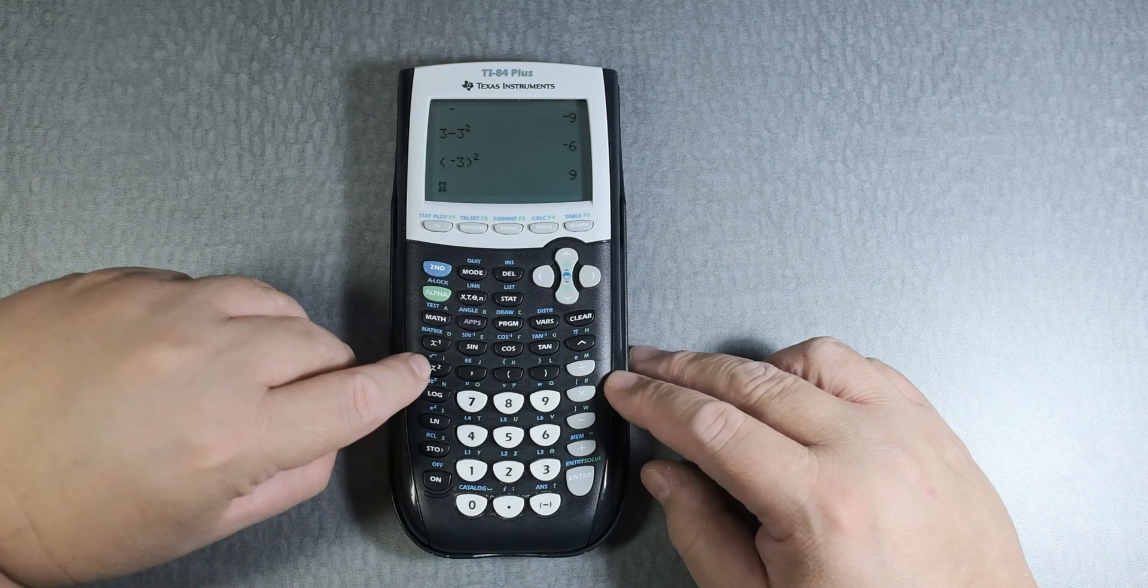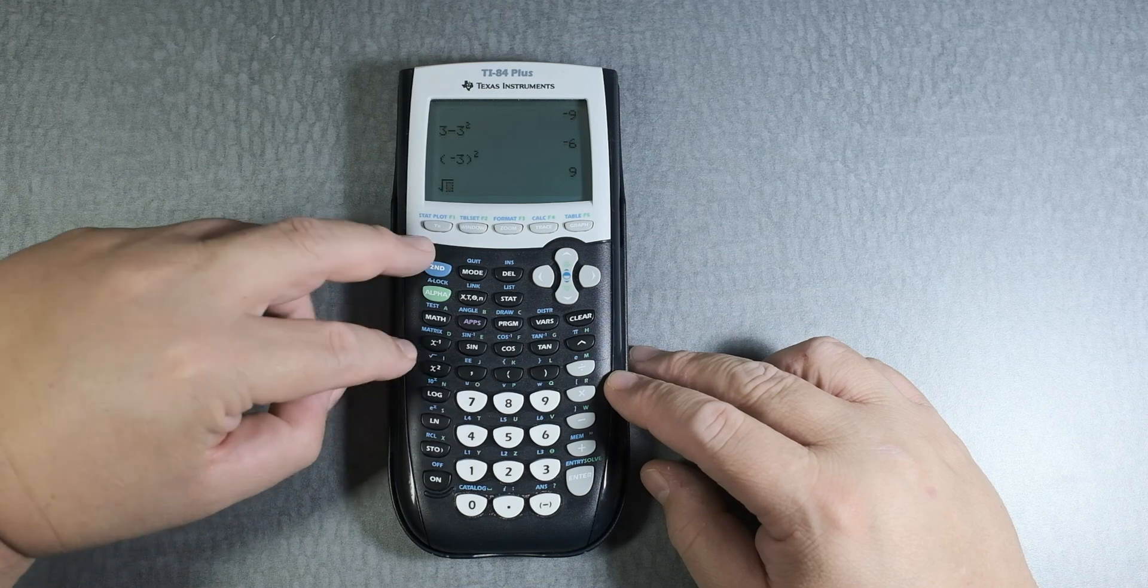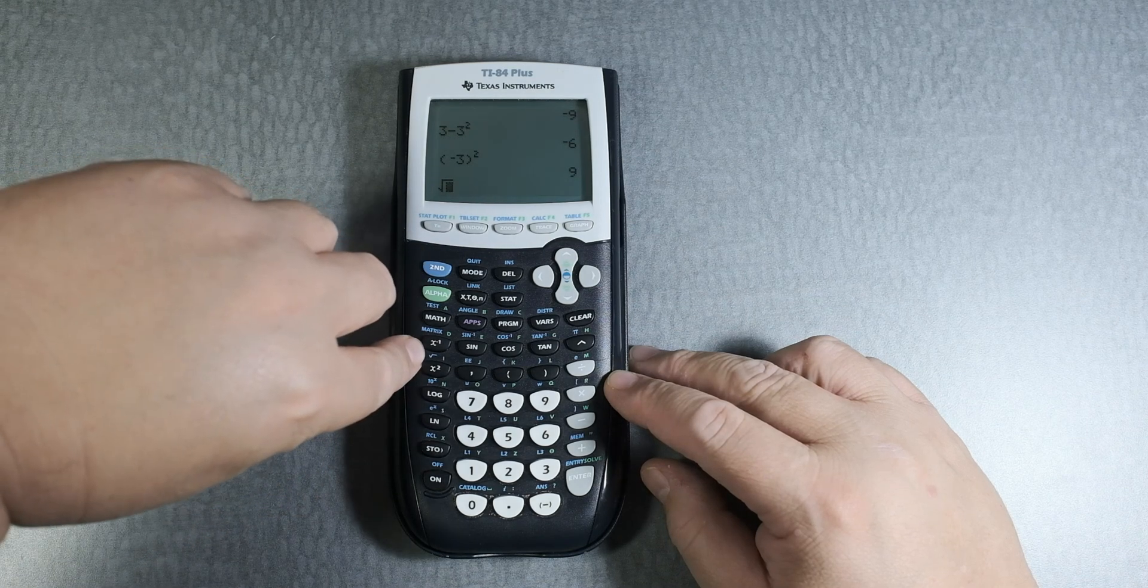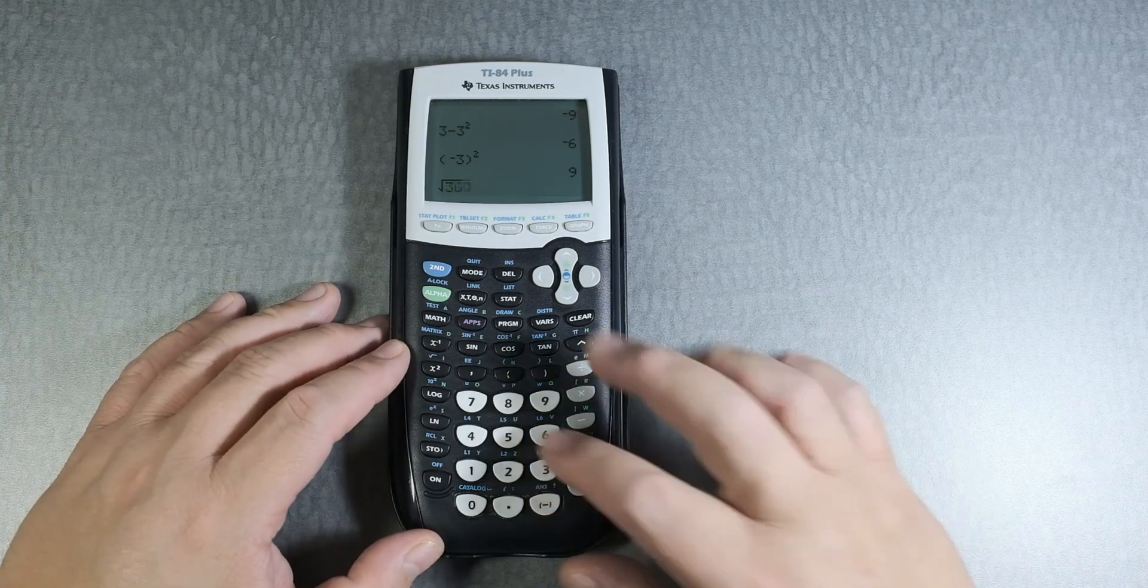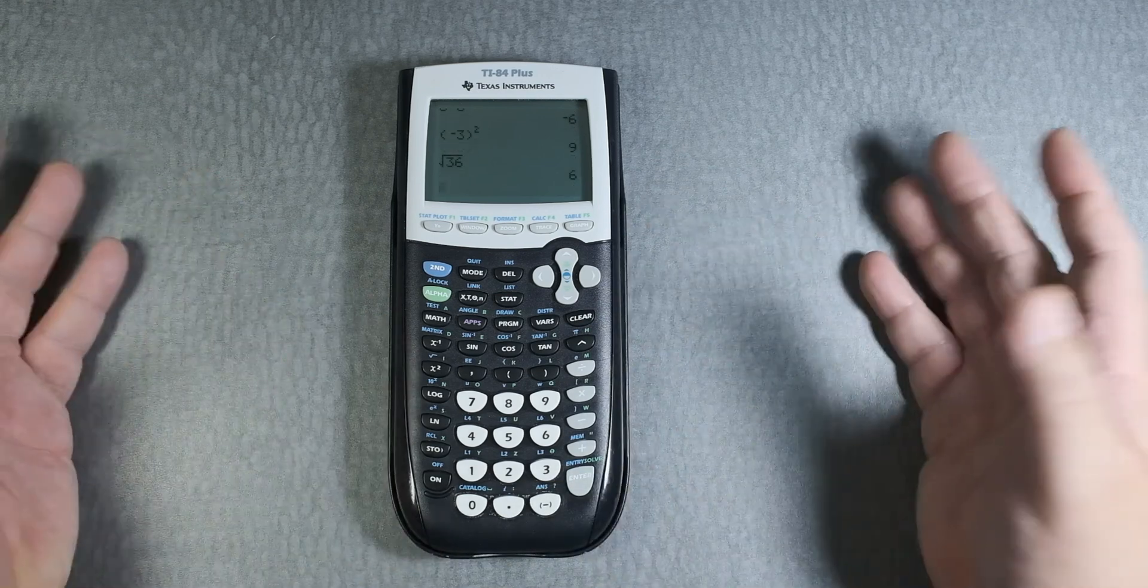So second and then squared, but it's really the blue button for the blue function, which is the square root. Let's put 36, enter, and it gives you the value.